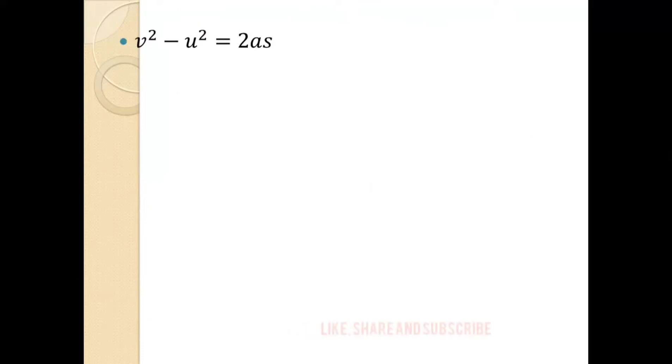So I will use this equation v square minus u square, it is equal to 2as. And from this what will I get, acceleration or what? Obviously acceleration I have to get because that is the only unknown thing here.